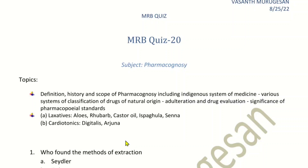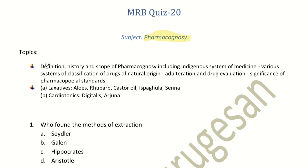Hello everyone. In this topic we will talk about quiz 20 part 1, which covers the pharmacognosy subject. The topics include a basic introduction about adulteration, Ayurveda, Siddha, Yunani, history, scope of pharmacognosy, laxatives, and cardiotonics.